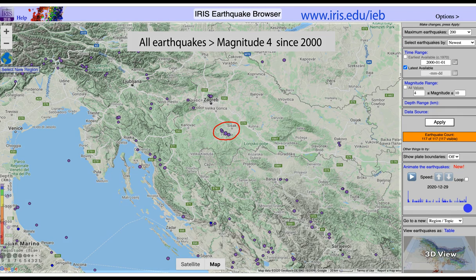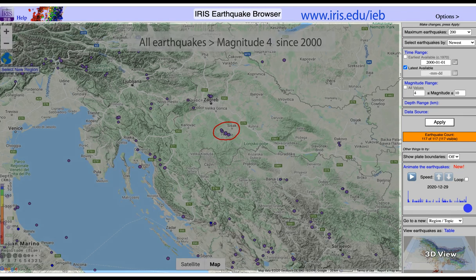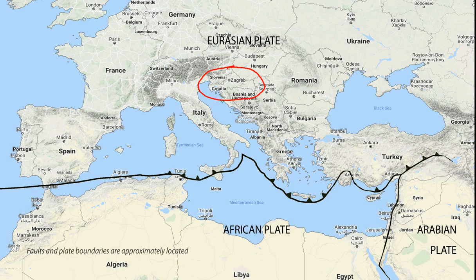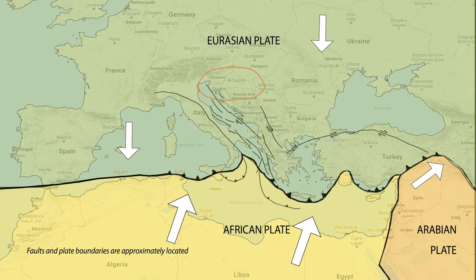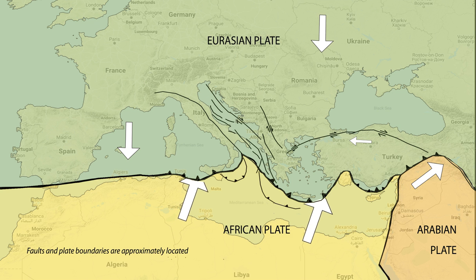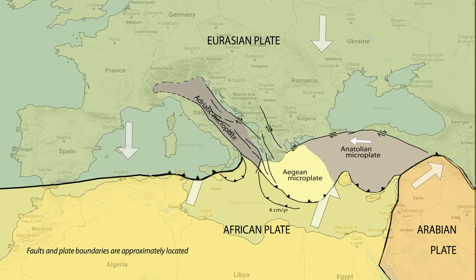Why are there earthquakes here at all? Croatia sits in a deformation zone along the southern margin of the Eurasian Plate. This region is strongly affected by the subduction of the African Plate beneath the Eurasian Plate, which has caused this area to break into a series of microplates.